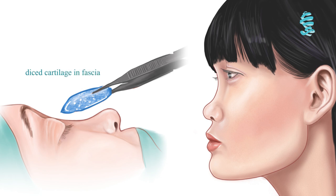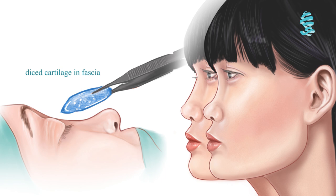Some surgeons use alloplastic materials such as silicone or Gore-Tex. Augmentation can also be achieved by a solid rib graft or by diced cartilage in fascia.